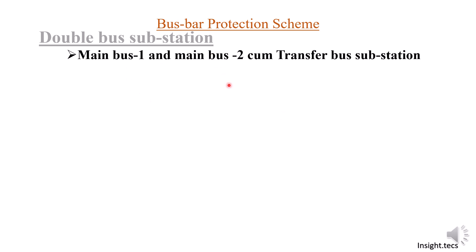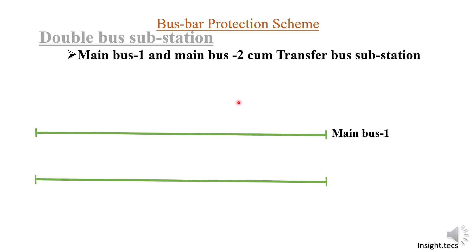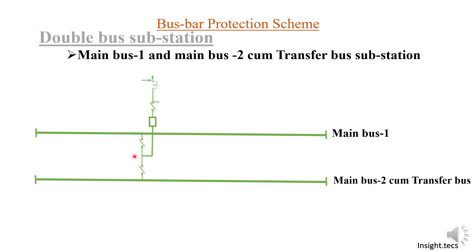You have a double bus substation, but you can get the benefits of a three bus substation. The first bus is main bus one and the second bus is main bus cum transfer bus. The second bus plays the role of both main bus two and the transfer bus.